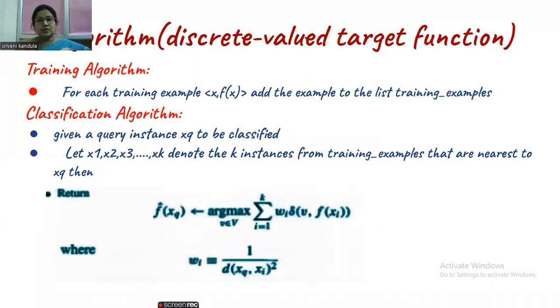So here is the algorithm. If you observe, the algorithm is very much similar to KNN. You need not study the algorithm again, just remember what the changes are. This is for the discrete-valued target function. You should know the difference between discrete value and continuous target value. I'll explain this when we go to the example.